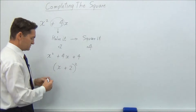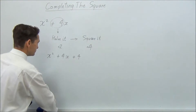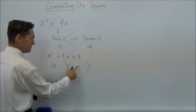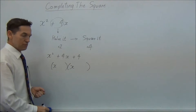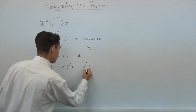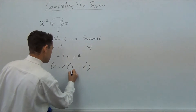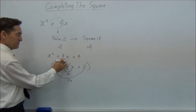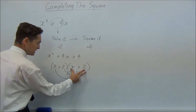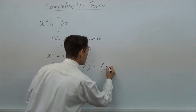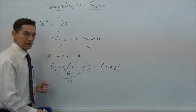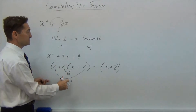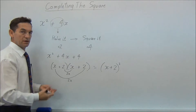If we just look at the factorisation of that, we want an x and an x. We want two numbers that multiply to give 4 — we know it's going to be 2. What is 2 times x? That's 2x. What is 2 times x? That's 2x. 2x plus 2x is 4x. So this is a square — it's the same thing — and that can be expressed as x plus 2 squared. That's a perfect square. There are two ways you usually express a perfect square. This is how we make a perfect square.